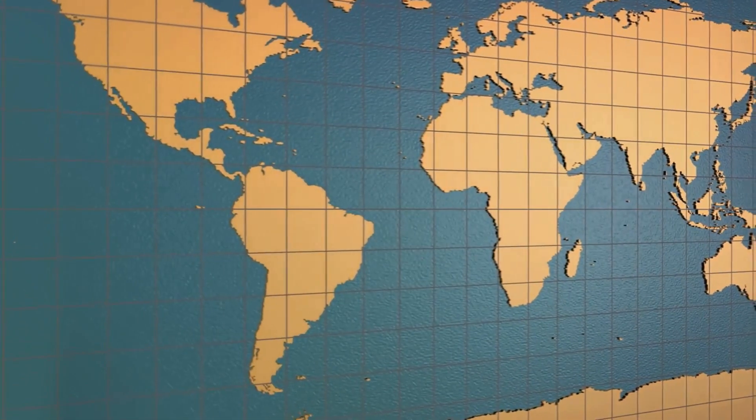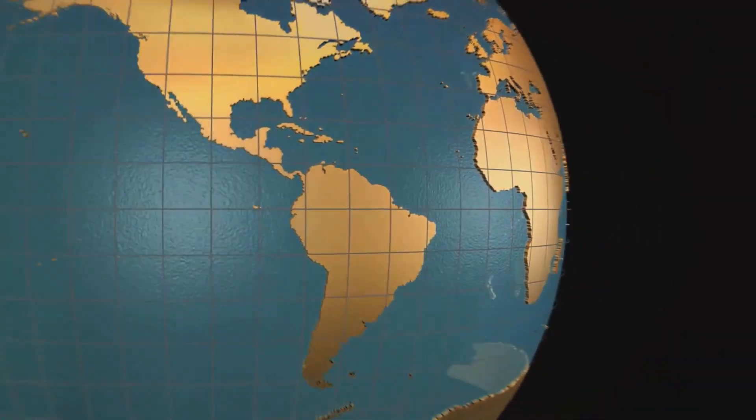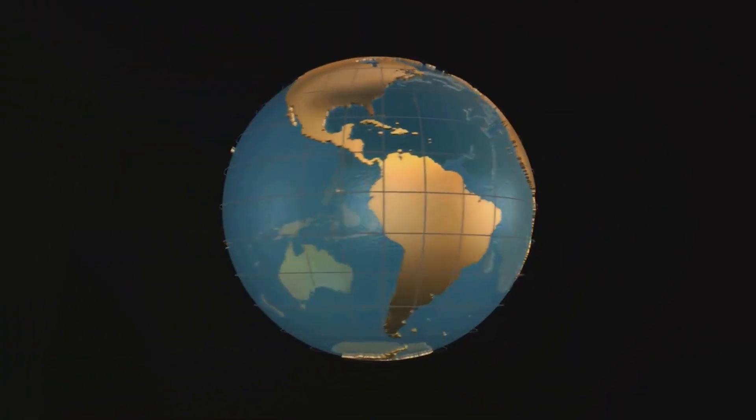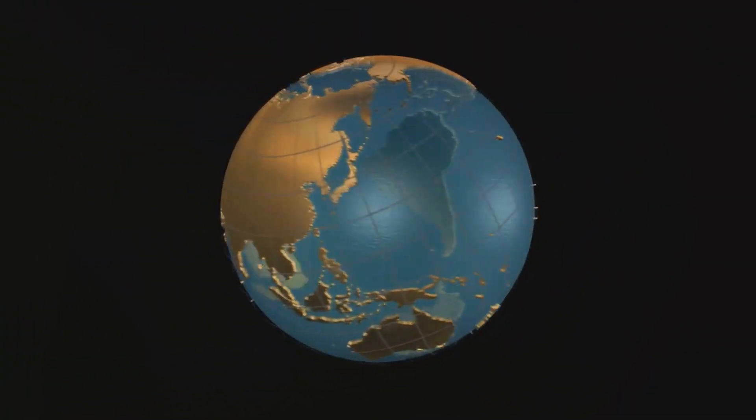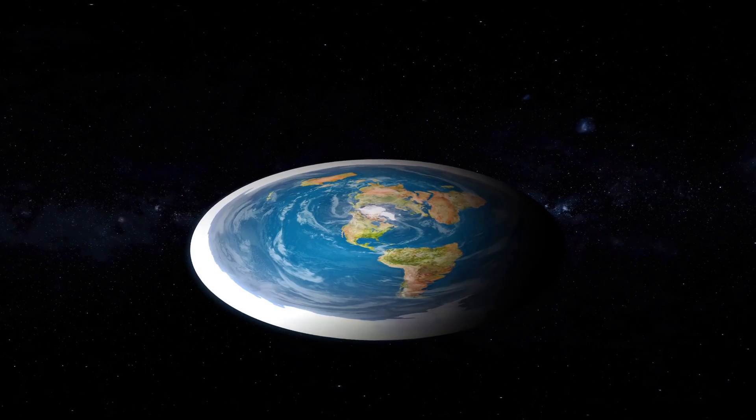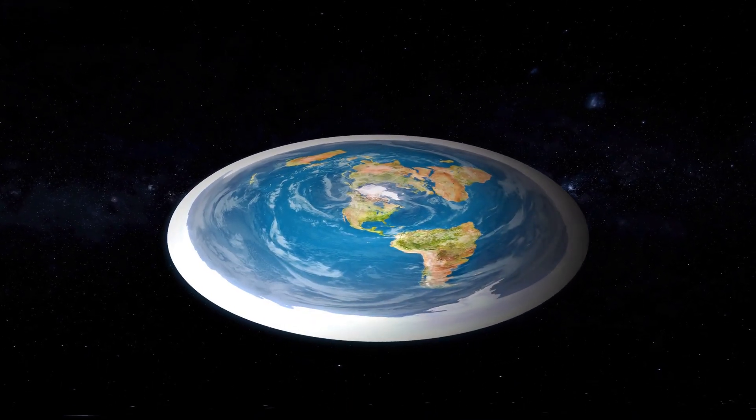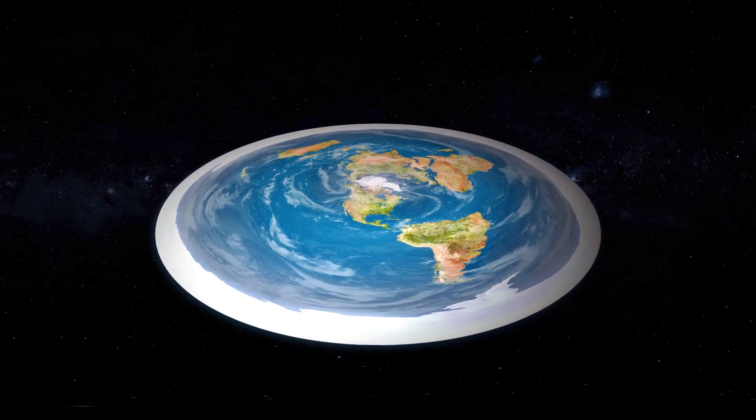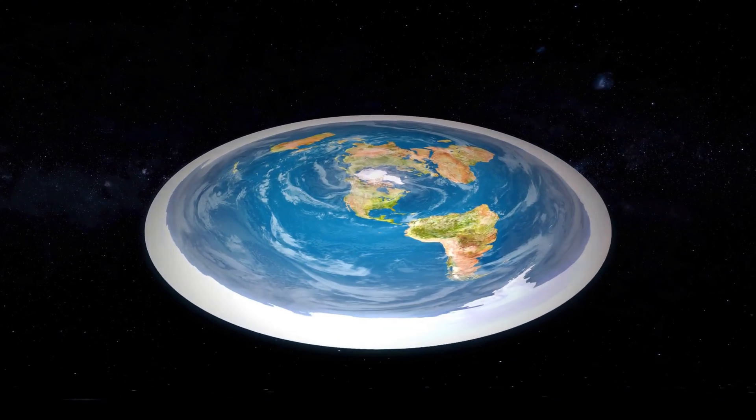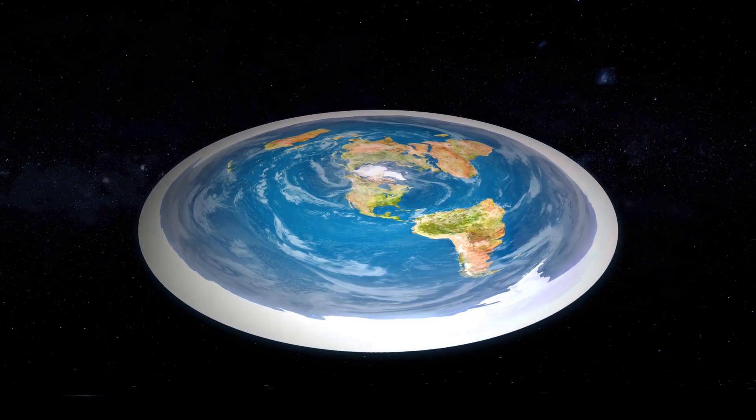These flat Earth proponents hold a variety of beliefs and theories. Some suggest that the Earth is a flat disk surrounded by an ice wall, while others propose different models entirely. But what unifies them is a shared skepticism towards mainstream scientific narratives and a firm belief in trusting their personal experiences and observations.